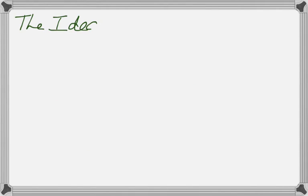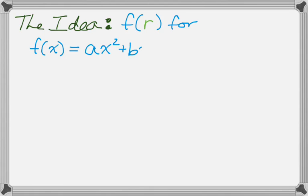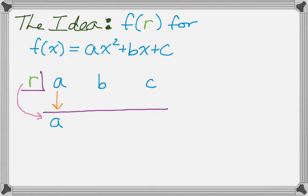So here's the general idea. Say I want to find f(r) for f(x) equals a generic quadratic: ax² + bx + c. So let's see what would happen if I did that. So r goes in the box, and then I have a, b, and c. I had to space them out a little bit. So the first thing I'm going to do is drop down the a. I'm going to multiply r and a to get ar.